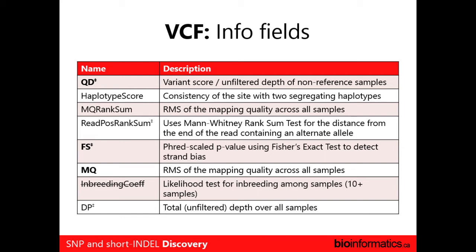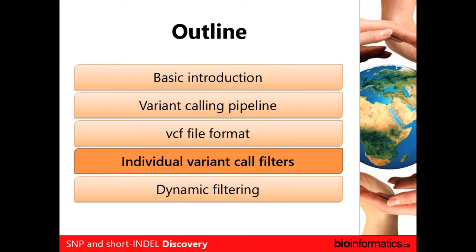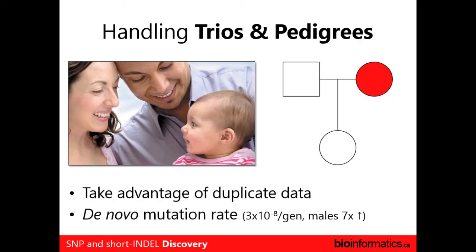You can use familial relationships to verify how well your variants are doing. If you did SNP calling individually on the mother, father, and child separately, and found that a site was in conflict, you might be less likely to believe that locus. In the 1000 Genomes Project, they measured the apparent de novo mutation rate in humans. Interestingly, in males it's about seven times higher than in females. You can use that kind of constraint in your variant calling.